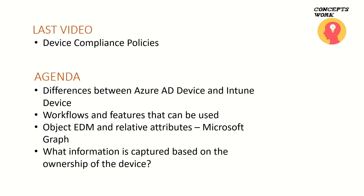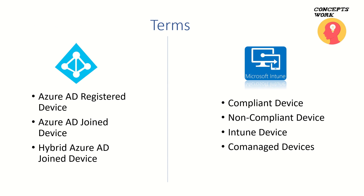The last thing I'll talk about is what kind of information will be captured depending upon the ownership of a device. Whenever a device gets onboarded to Intune it can be a personal device or a corporate device. Now there are some very common terms: Azure AD Registered - a device that is just workplace joined to Azure Active Directory - then Azure AD Joined, then Hybrid Azure AD Joined. These are the three terms associated with Azure Active Directory.